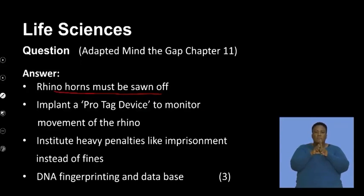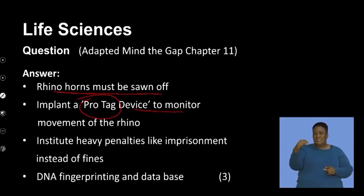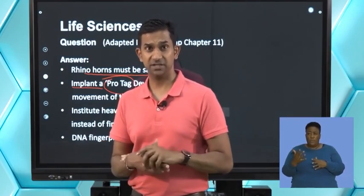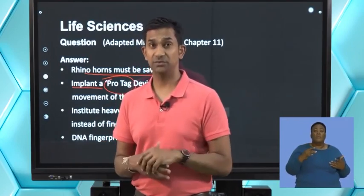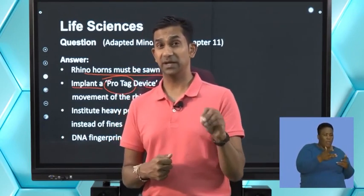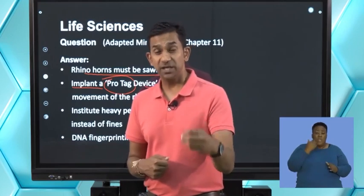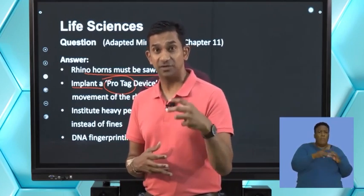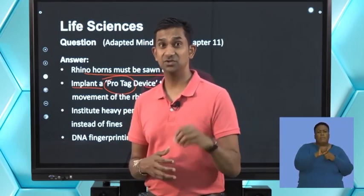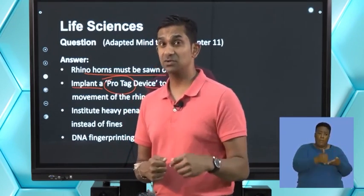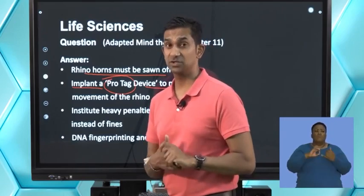Another method involves pro tags fitted into rhinos as collars to monitor their movement. If we can monitor rhino movement in their natural habitats, we are able to track where they are, monitor their numbers and positions, and should there be unusual movement or a lack of movement, they can be tracked to a specific location so that assistance or necessary protective steps can be taken.